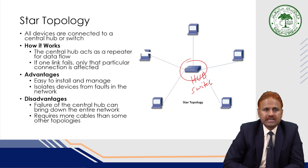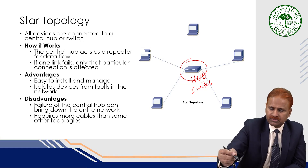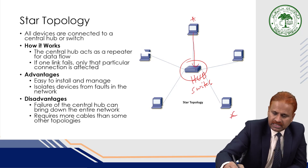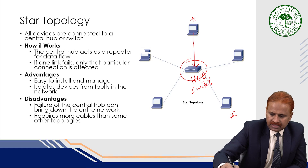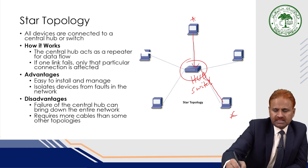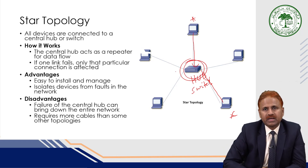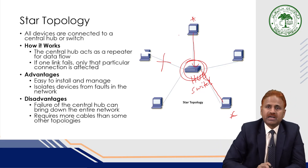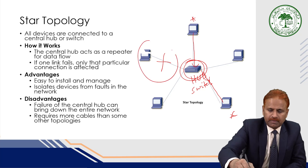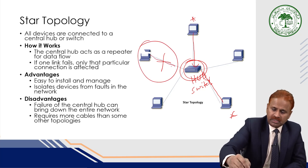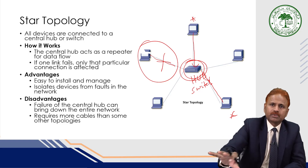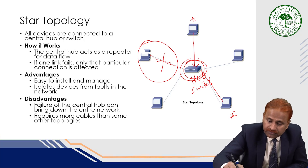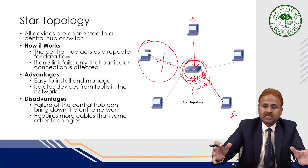If one link fails, only that particular connection is affected. Say for example, if this computer wants to transmit a message to another computer, it will send the data to the hub and the hub will transmit the data to the destination address. If any reason this link is not working, only that computer will not be part of the network — it will not affect the operation of the whole network.